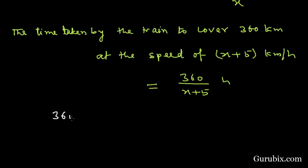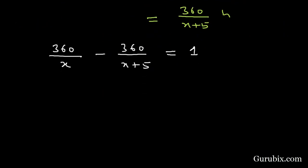We have 360 over x minus 360 over x plus 5. This speed is less so the time is larger. This speed is high so the time is less. So if we subtract this time from this time, then we have 1 hour. This is given in the question.